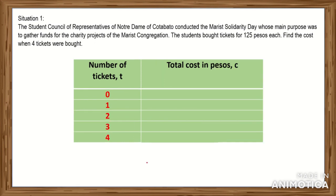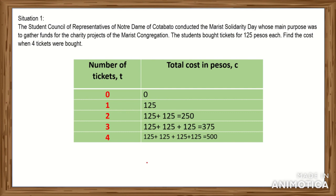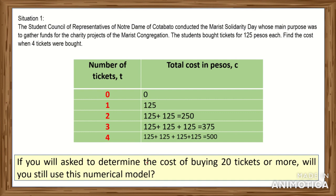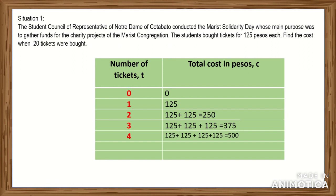Let us now check. For 0 tickets sold, the cost is 0. For 1 ticket, the cost is 125. For 2 tickets, that is 2 × 125 = 250. For 3 tickets, that is 3 × 125 = 375. And for 4 tickets, that is 4 × 125 = 500. Now, if you will be asked to determine the cost of buying 20 tickets or more, will you still use this numerical model? Of course not — it would be impractical to make a table of values up to 20.